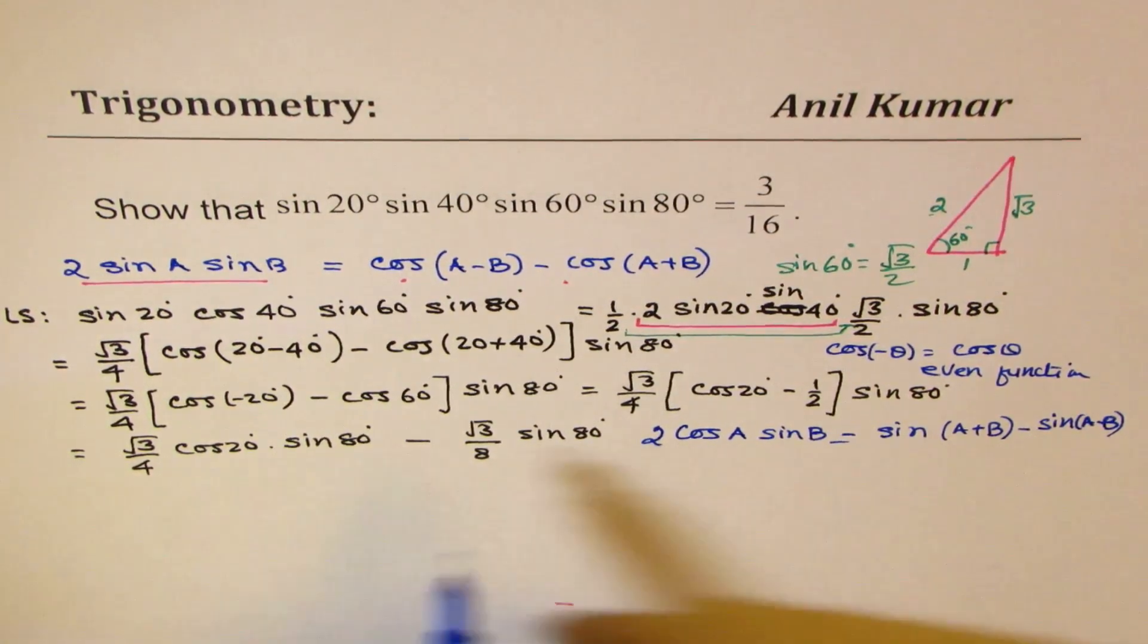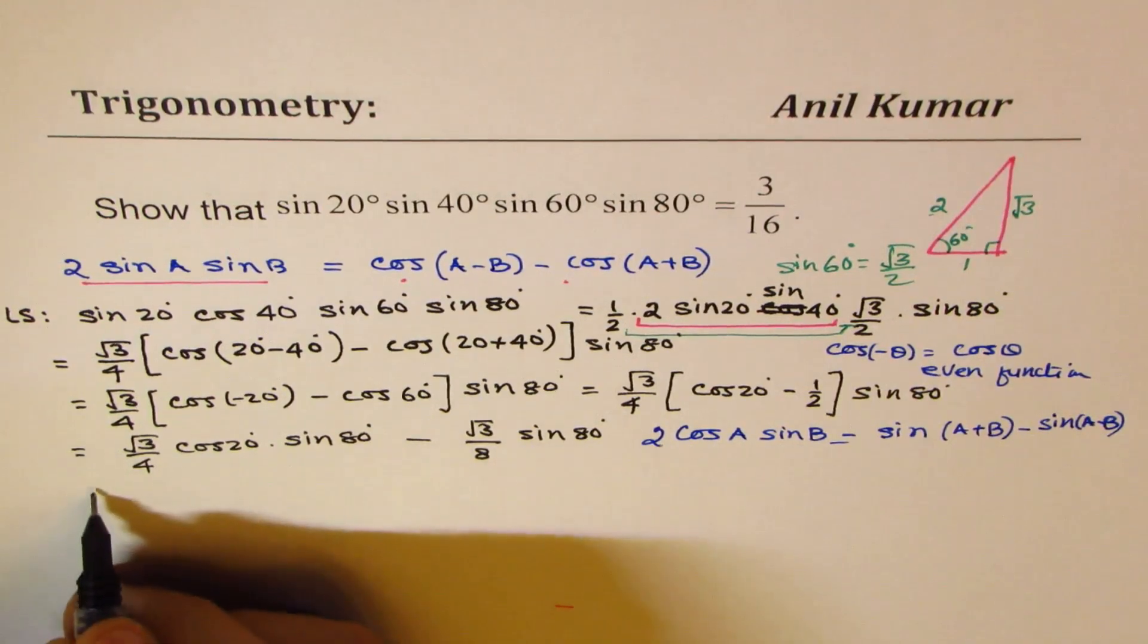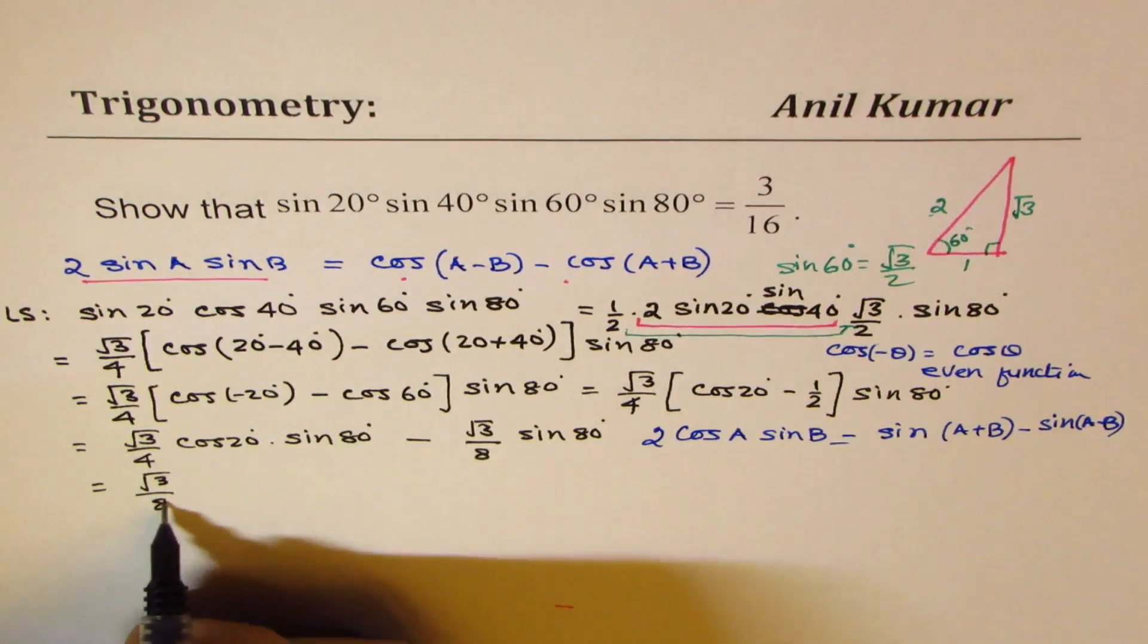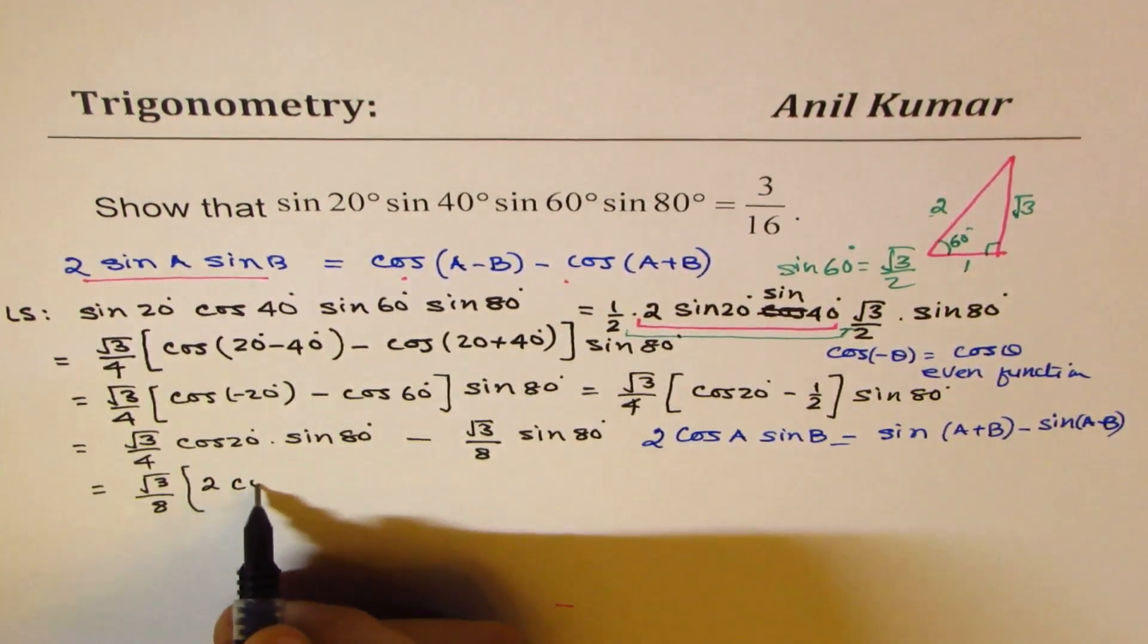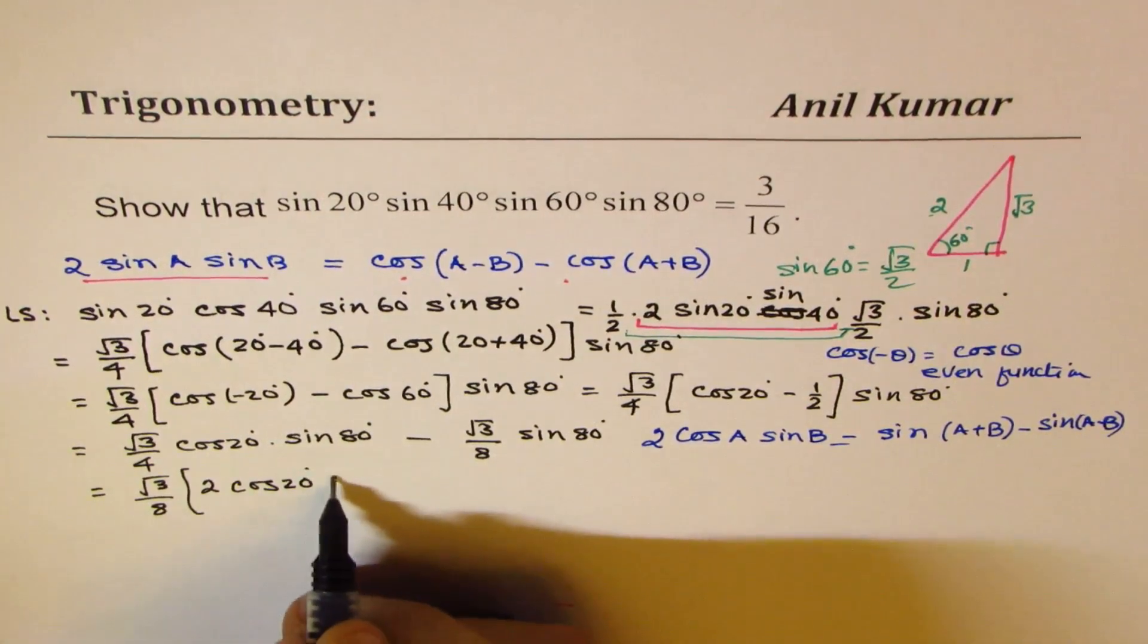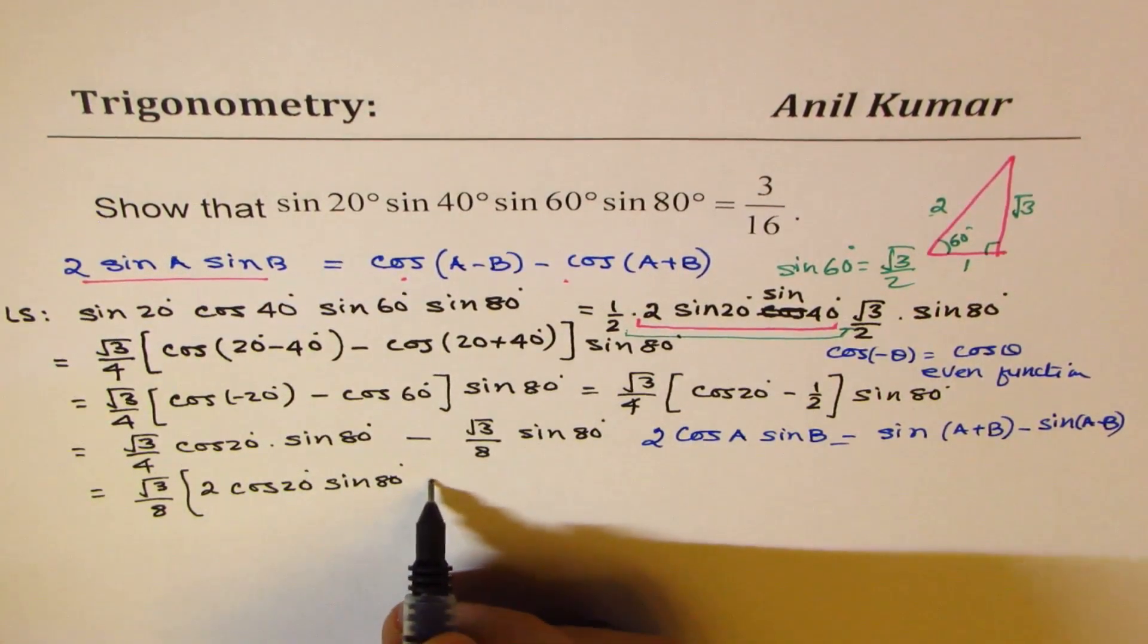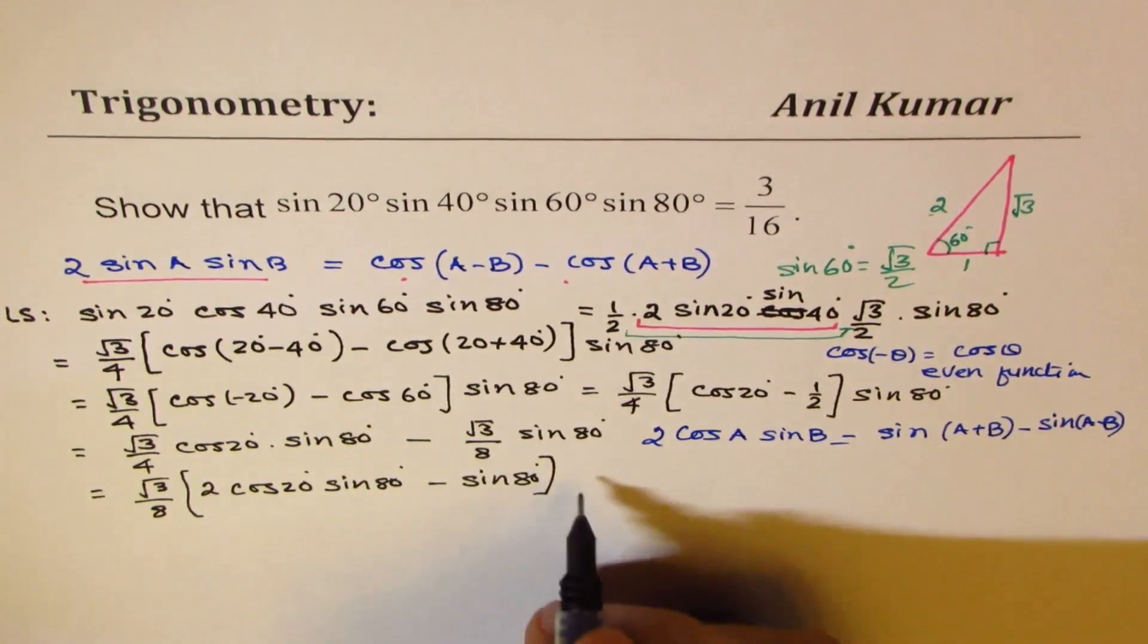Since it is twice, I should write this as, let me do one thing. Let me take √3 over 8 common. That will solve many things. So if I do that, I get here twice, cos 20°, sin 80°. And here I get minus sin 80°. That will help me.